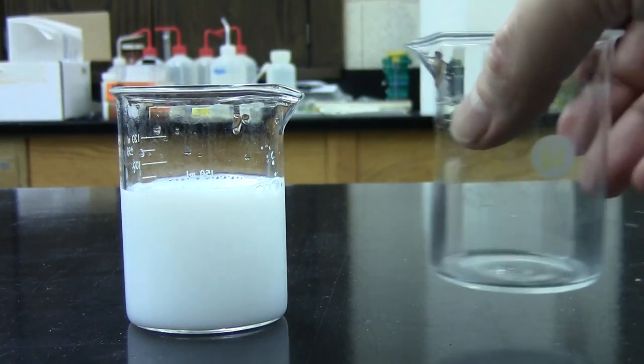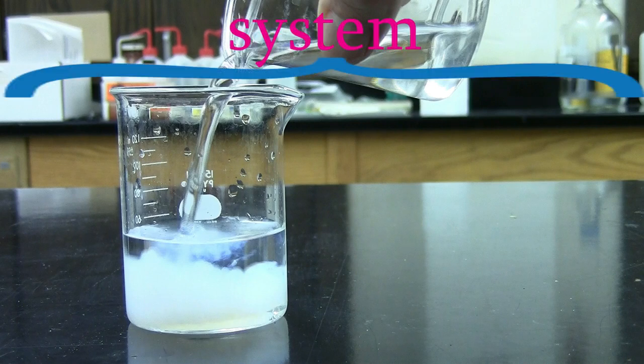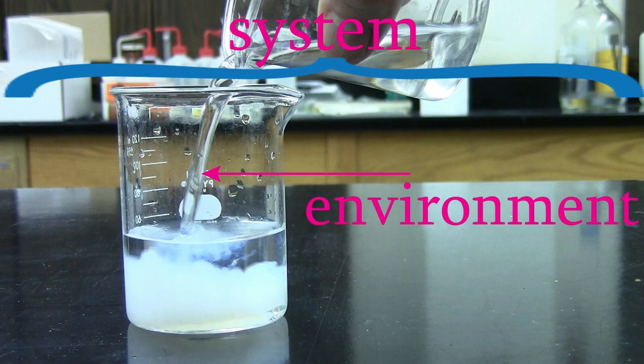To understand why this reaction can still happen, we just need to remember the details of what the second law actually says. The second law states: A spontaneous process always results in an increase in the entropy of a closed system. The key here is those last four words. It turns out that the beaker where this reaction takes place is not a closed system. But why not? The system in this example is more than just the beaker and the chemicals in it. Instead, the system includes both the reaction and its environment. The environment includes the solvent in the beaker, the air in the lab, the glass of the beaker, and so on. The second law says that it's the entropy of the whole system that must increase. So if the entropy of the reaction goes down, that means the entropy of the environment must go up even more.